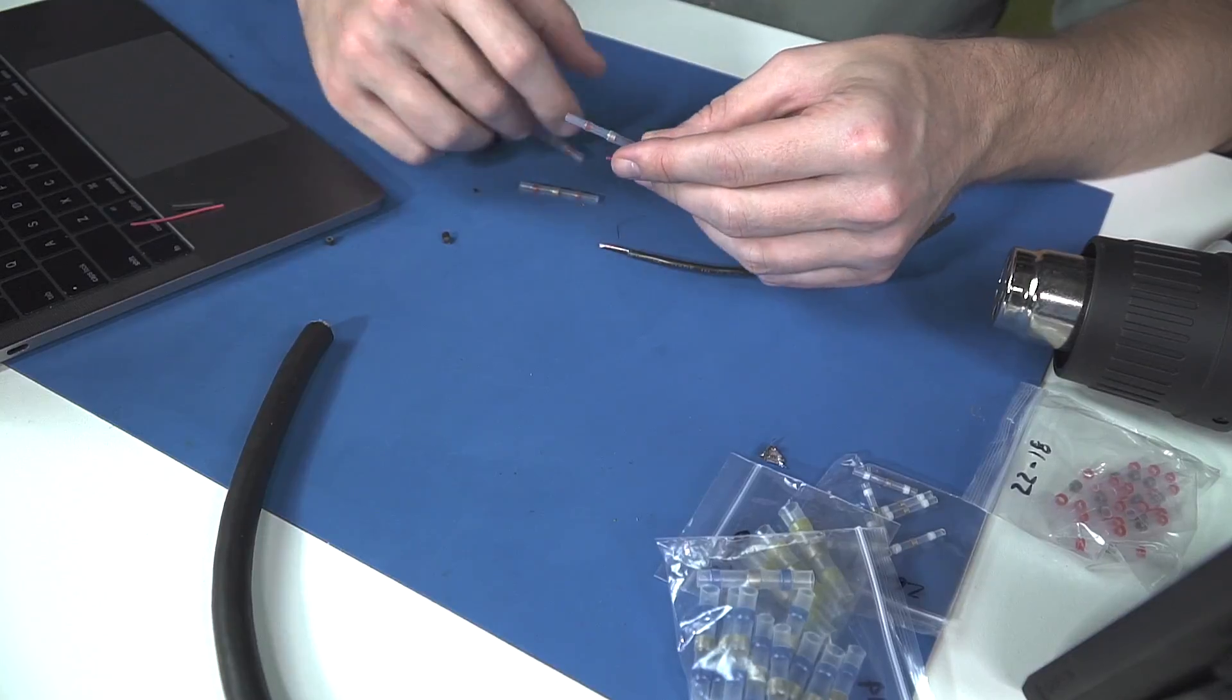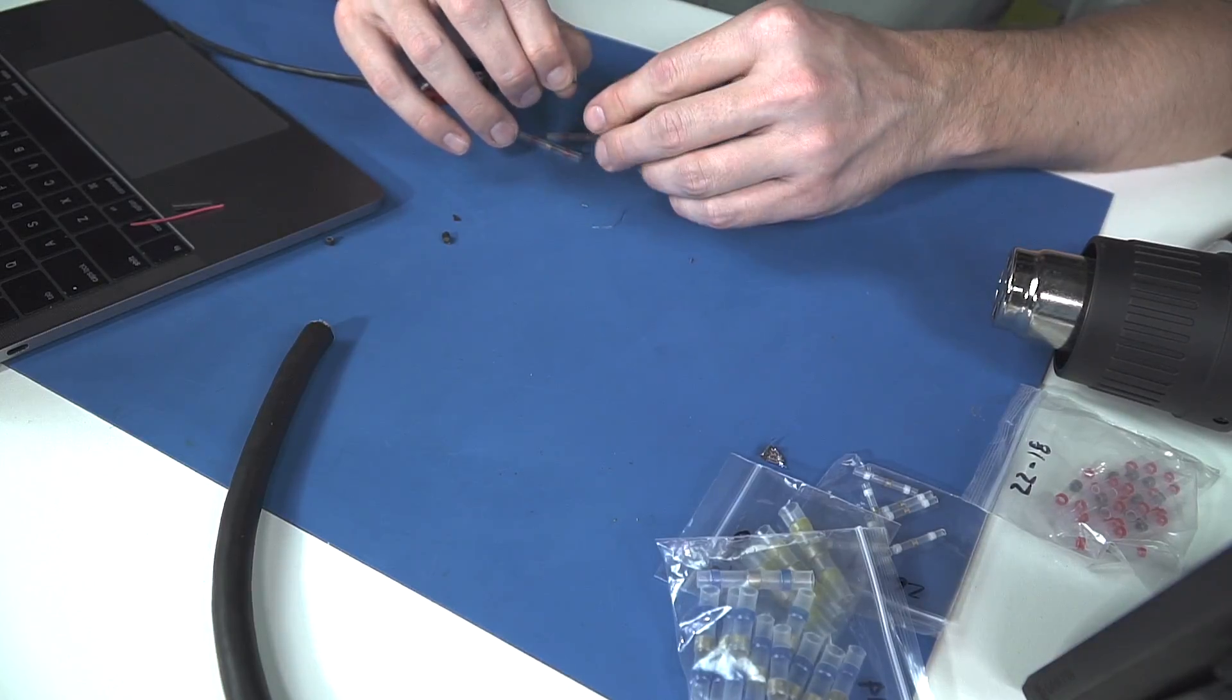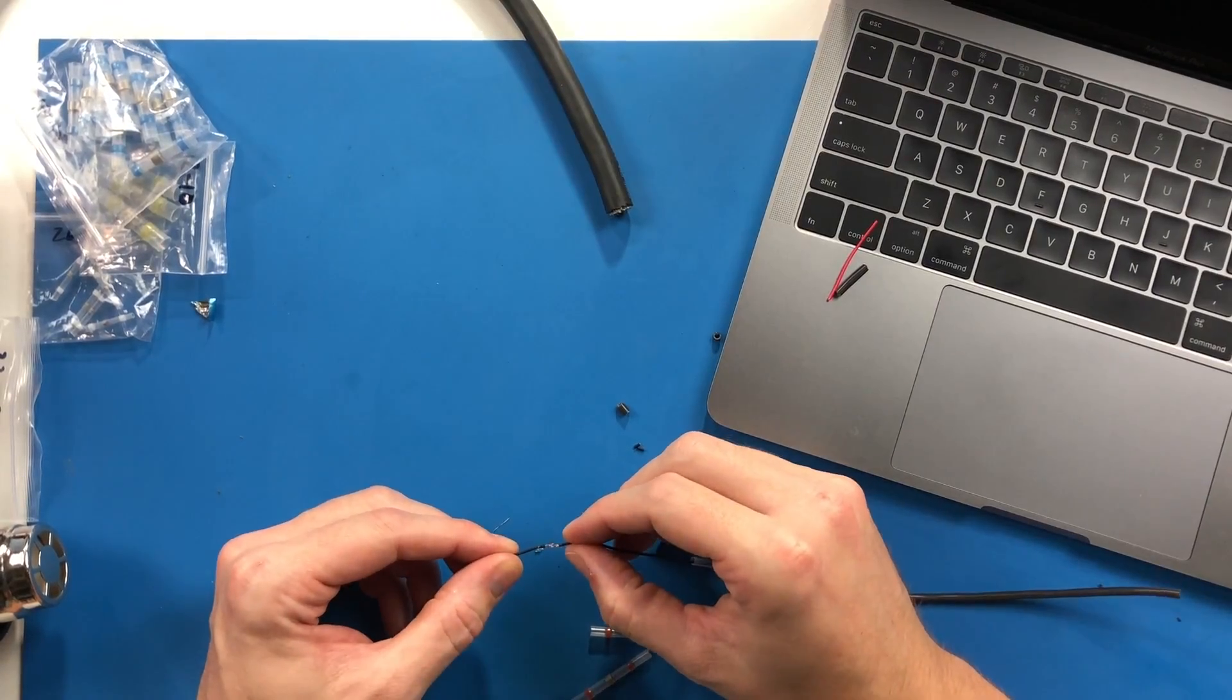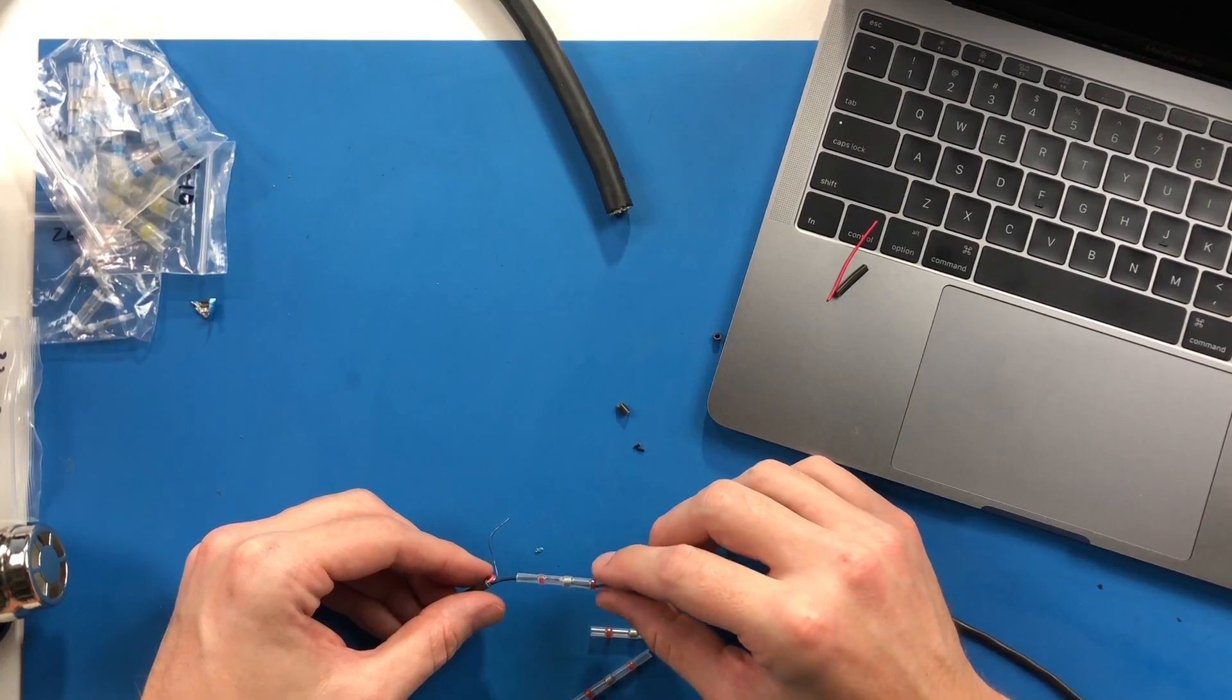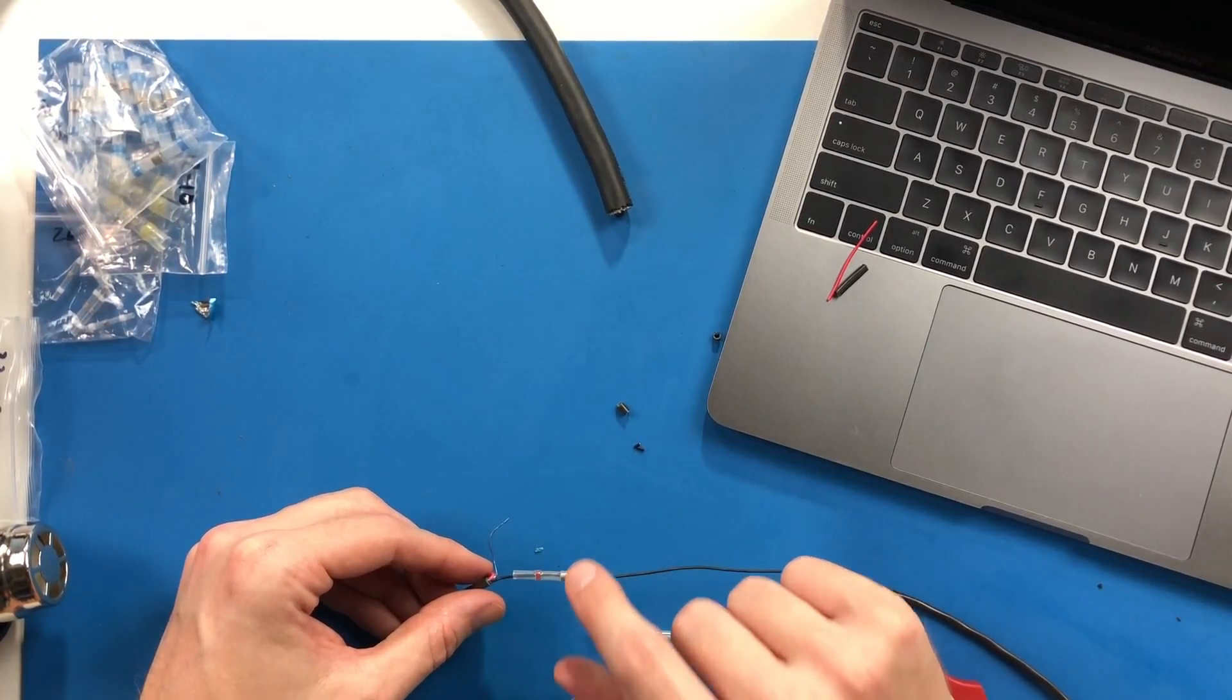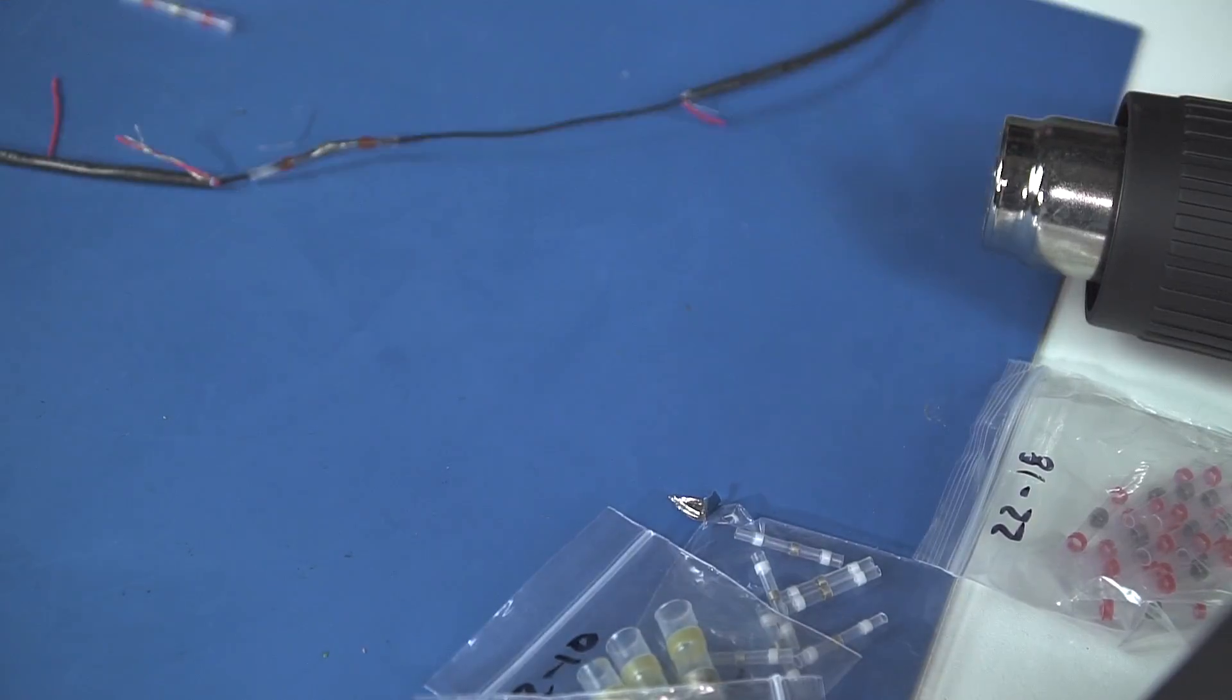All right, we've pushed them together. These don't hold because they're 22 gauge cable and this is an absolute joke. So then we slide this over top, position that band so it's over the joint there, and now we need to apply some heat.